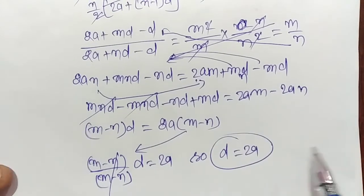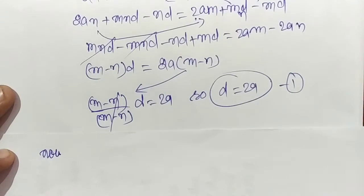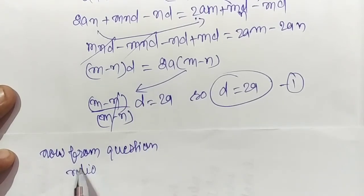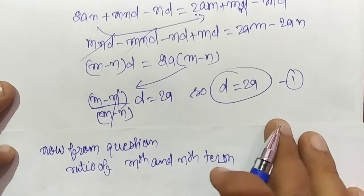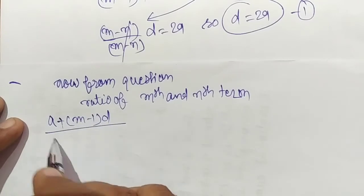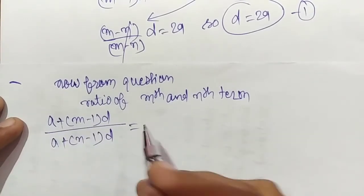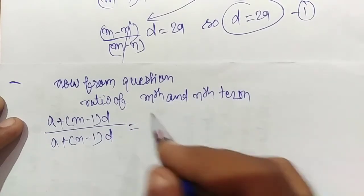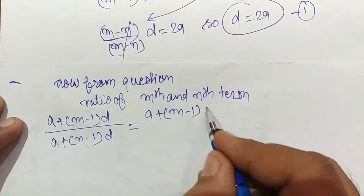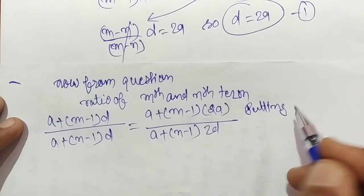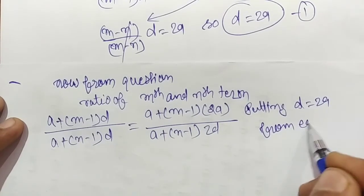So d = 2a. This is Equation 1. Now we go to the ratio of the mth and nth terms: [a + (m-1)d] / [a + (n-1)d]. We know the value of d is 2a, so putting d = 2a from Equation 1.